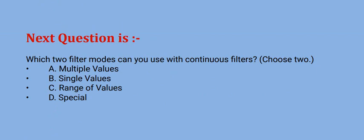Next question is: which two filter modes can you use with continuous filters? Choose two options. The options are option A multiple values, option B single values, option C range of values, and option D special. The correct option is option C and D.